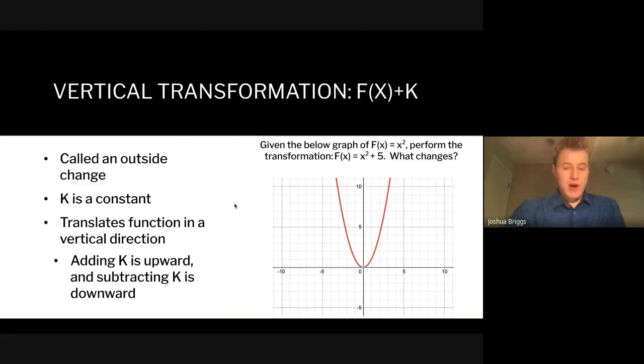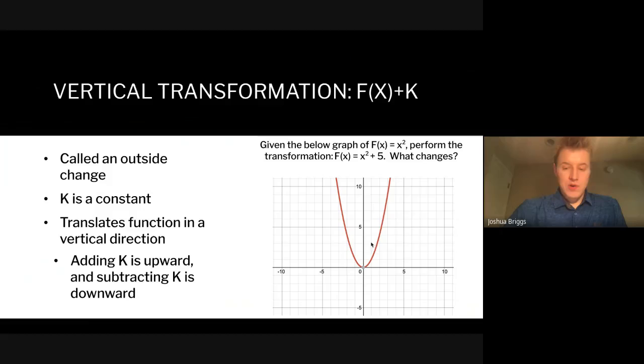To algebraically express a vertical transformation, this is called an outside change — it is when you add a constant value to the function without doing anything to the inside operation. We're calling that constant k. If you add a value of k it will translate your function upward; subtracting is downward. Given the graph of f(x) = x², if you perform the transformation of adding five, what would the resulting graph look like?